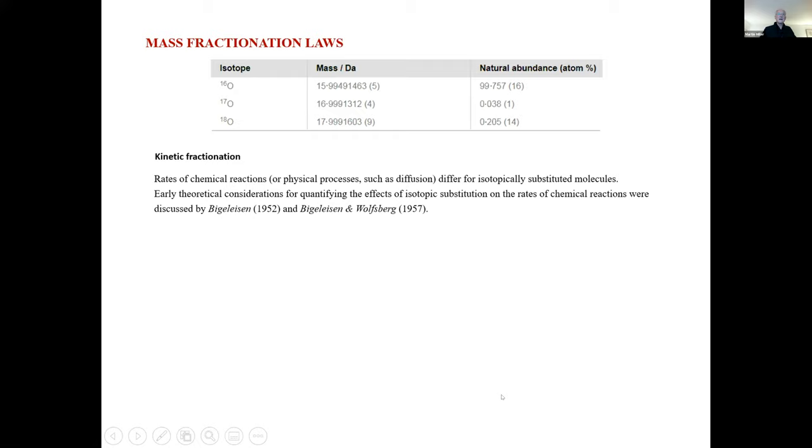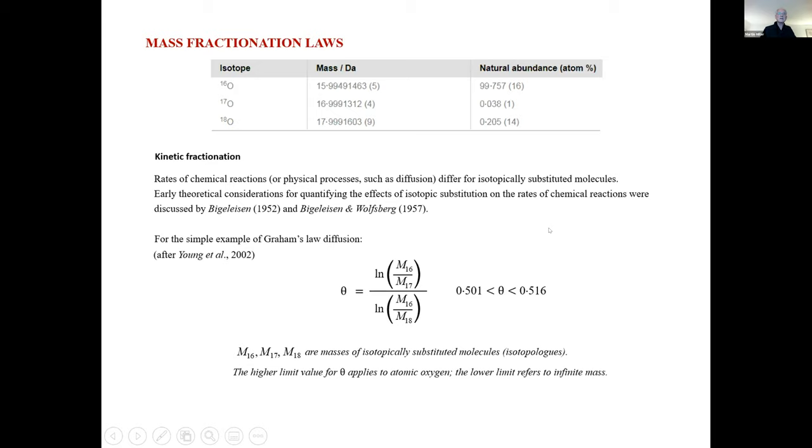Kinetic processes can be considered using a similar type of formalism. This was looked at by Bigeleisen and Wolfsberg in the 1950s. And then more recently, Ed Young published this expression for theta, based on the masses of the isotopically substituted molecules. And we can see that on this basis, theta would vary from just over a half to 0.516. And the higher limit value applies to atomic oxygen, the lower limit refers to infinite mass.